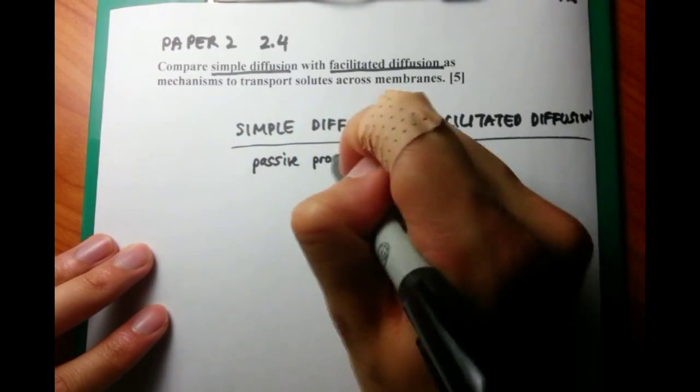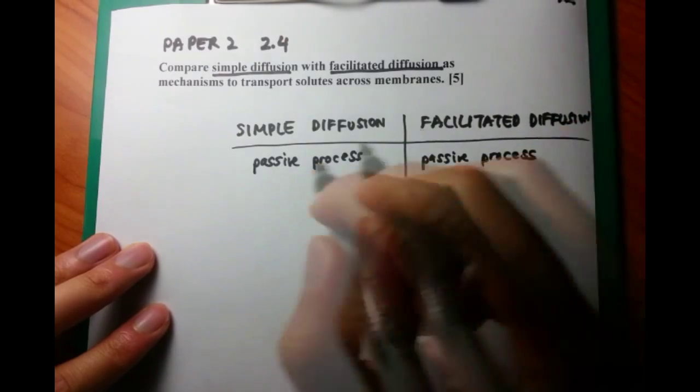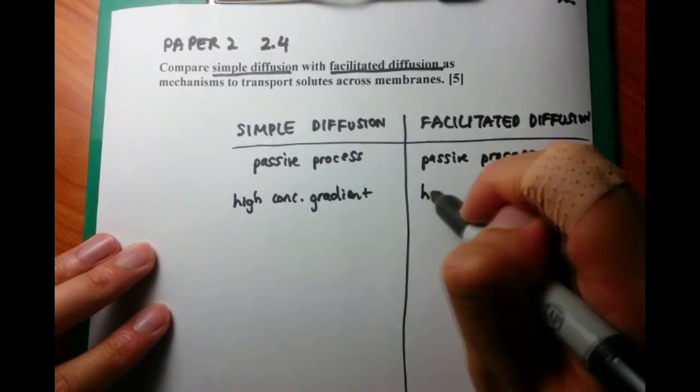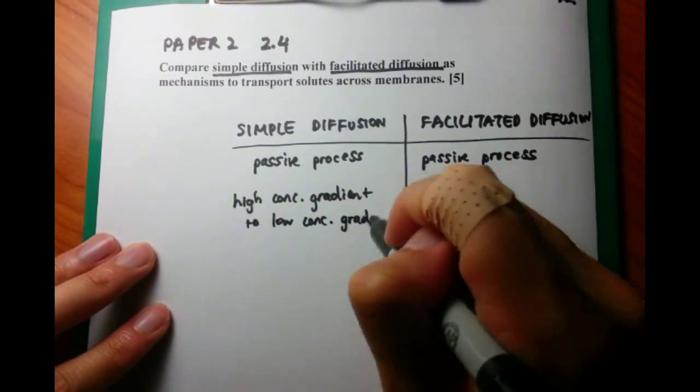Compare means that you can talk about the similarities and you can also talk about the differences. First similarity is that they're both passive processes going from a high concentration gradient to a low concentration gradient requiring no energy.